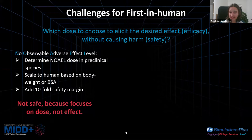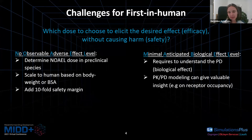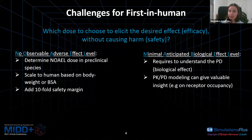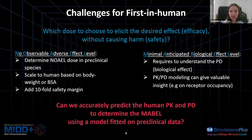One reason NOAEL is not always safe is that it focuses on the dose rather than the effect. Over the last years, there has been a shift, and instead of the NOAEL, the MABEL approach has been promoted — minimal anticipated biological effect level. As the name implies, it requires understanding the biological effects of the PD, and a PK-PD modeling approach can give valuable insights. The question I'm going to address is: can we accurately predict the human PK and PD to determine the MABEL using a model fitted on preclinical data?